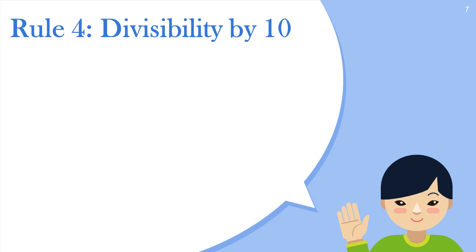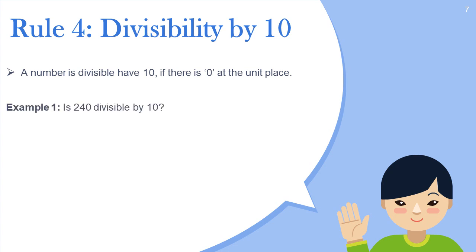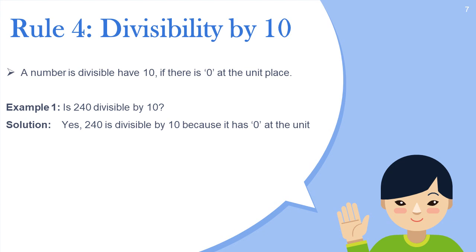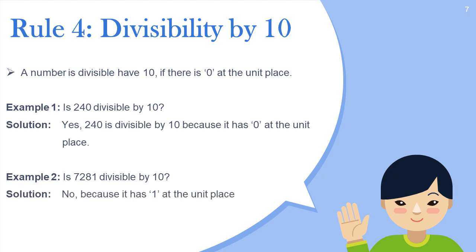We have another rule. Rule number four: divisibility by ten. A number is divisible by ten if there is a zero at the unit place. For example, is 240 divisible by ten? Yes, 240 is divisible by ten because it has zero at the unit place. Is 7281 divisible by ten? The answer is no, because this number has one at the unit place.